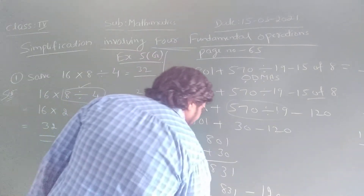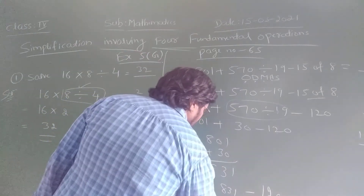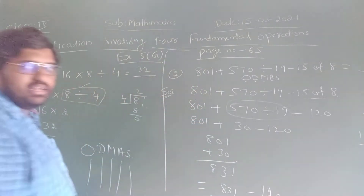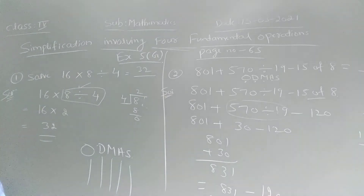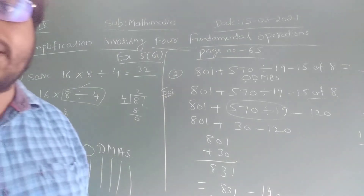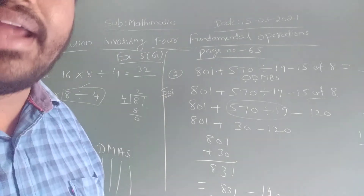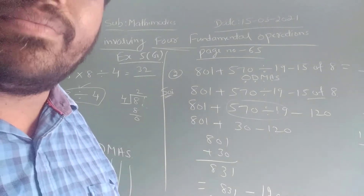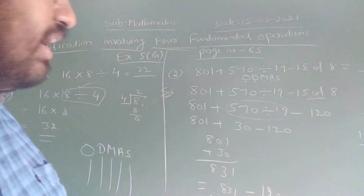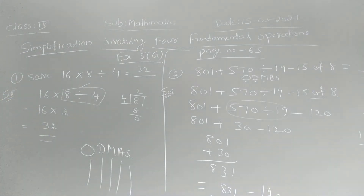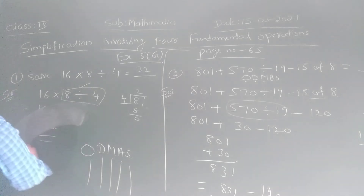831 minus 400. The answer is 431. So our answer is 431. All of you understood, right? Yes.